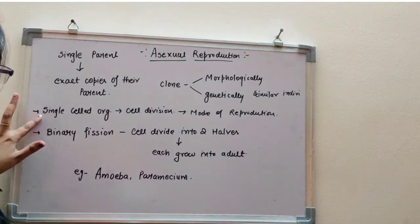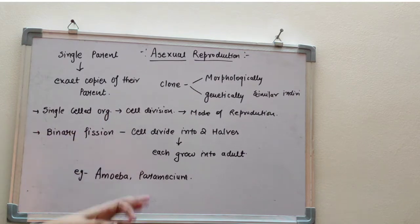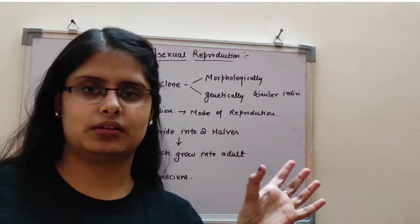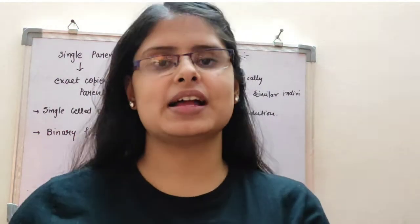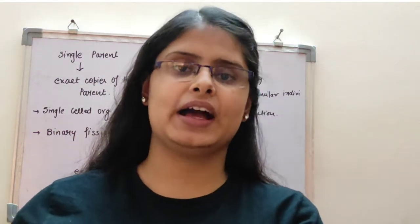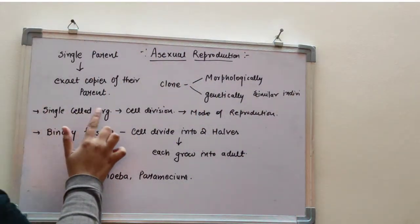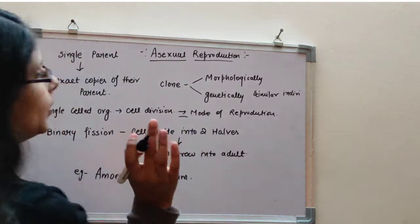In single cell organisms, cell division is equal to mode of reproduction. It means that in single cell organisms, cell division is one way of reproduction. But it is not like this in multicellular organisms. In multicellular, cell division is a different thing, reproduction is a different thing. You have to remember that in single cell organisms, cell division equals reproduction.